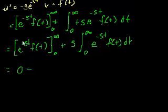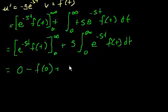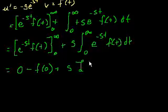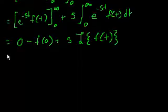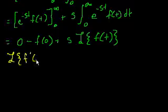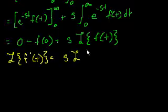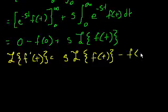Then we subtract the expression evaluated at 0: e to the 0 is 1 times f of 0, so that's just f of 0. Combining everything, the Laplace Transform of f prime of t equals s times the Laplace Transform of f of t minus f of 0.